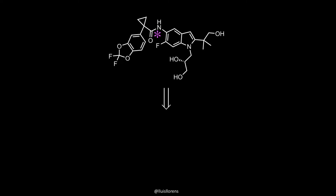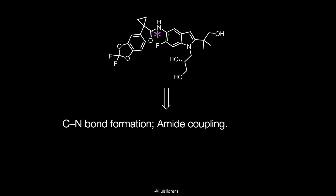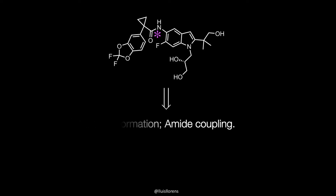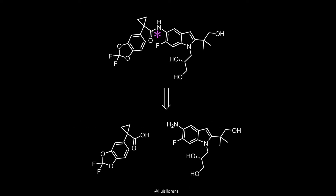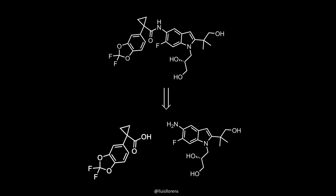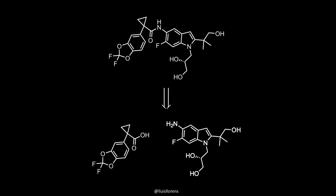A good disconnection for the convergence synthesis of the molecule involves the amide bond formation that unites the two key fragments: the acid fragment and the amine.